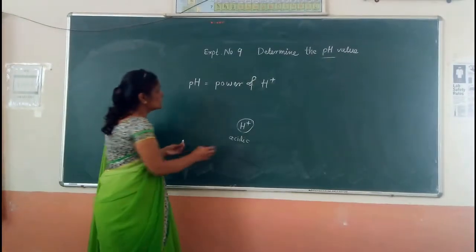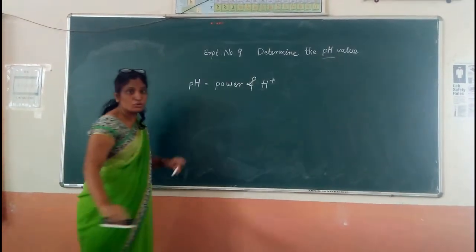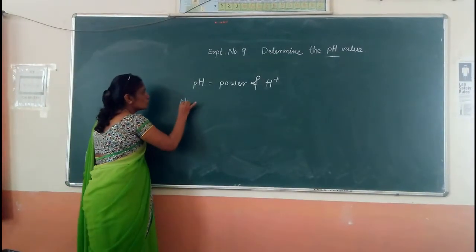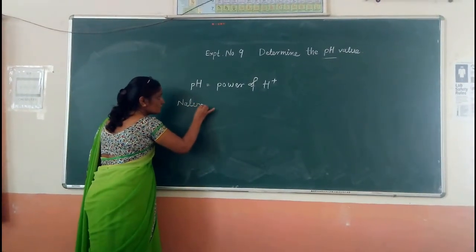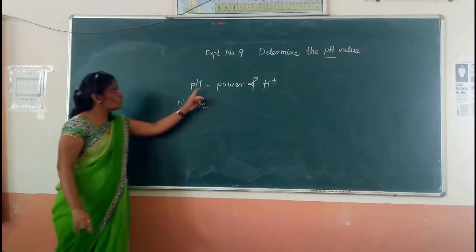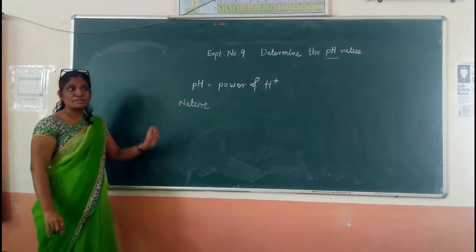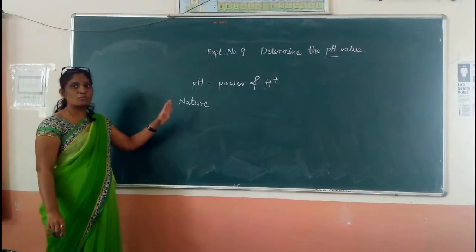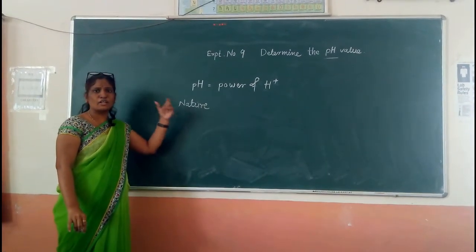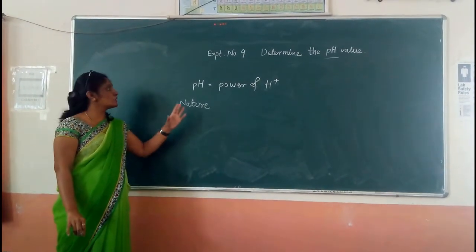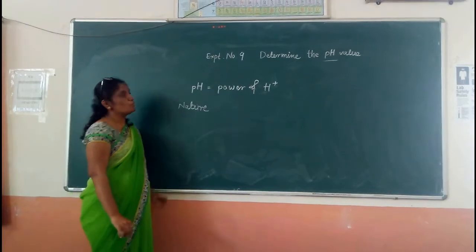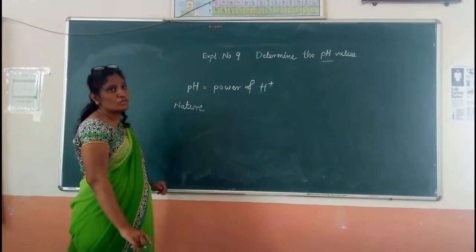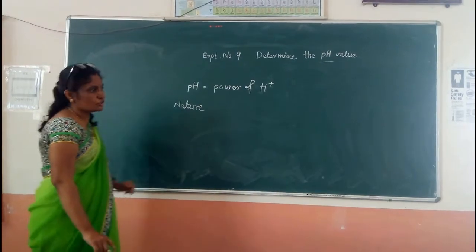So, where is pH used? pH is used to identify the nature of a solution. As an engineer, you must know the pH of an unknown solution or any water given to you — whether it is industrial wastewater or domestic water. You must know the pH of that solution.